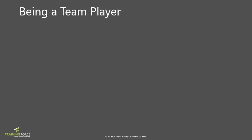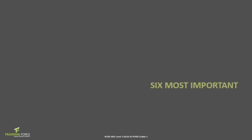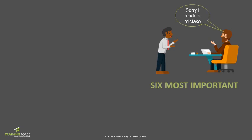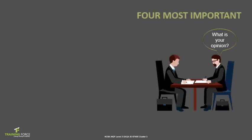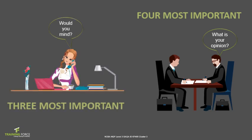Being a team player involves mutual agreement and respect. The six most important words in a team are 'sorry, I made a mistake.' The five most important words are 'you did a good job' — praise is important for morale and performance, as it motivates people. The four most important words are 'what is your opinion?' — making people feel they belong and that their input matters. The three most important words are 'would you mind?' — being polite and kind, which costs nothing and shows respect.